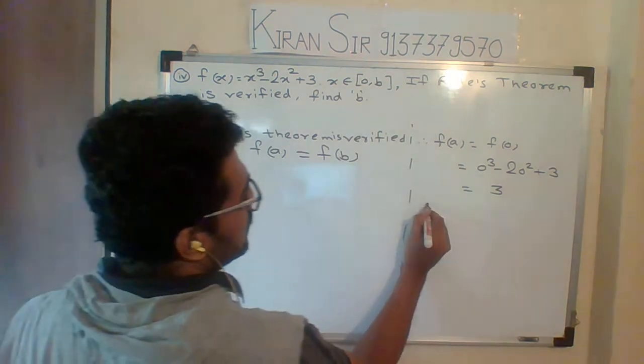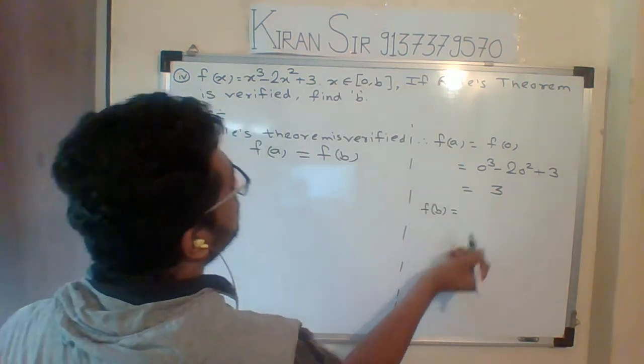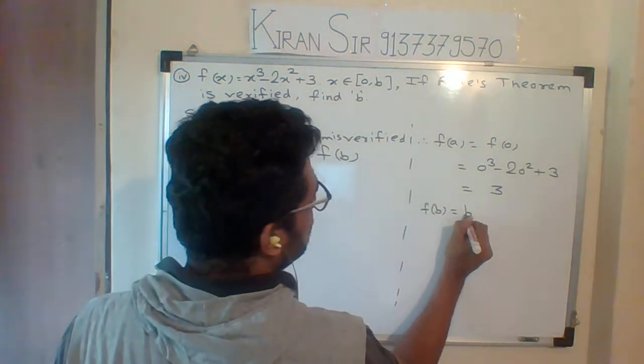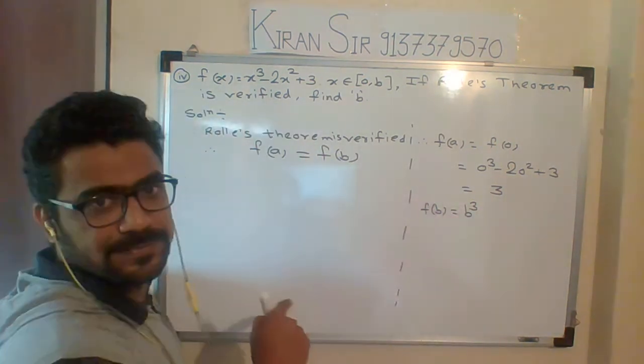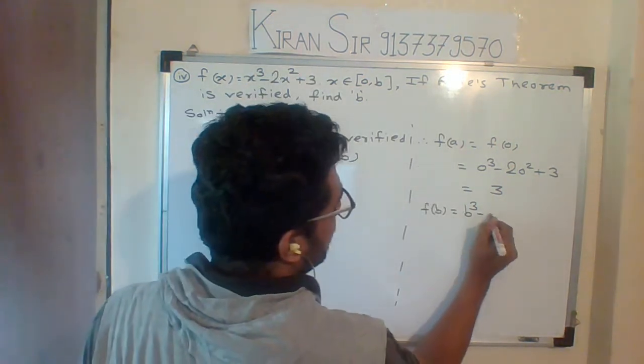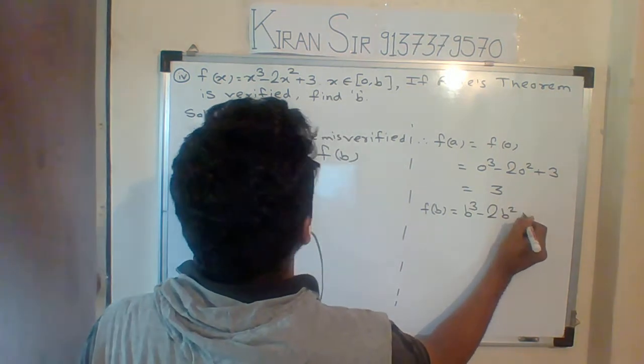We will get f(a). Then what I will do, I will put b. If I put b, I don't have value of b, but instead of x, I will put a value of b. So b cubed minus 2b squared plus 3, that is your f(b).